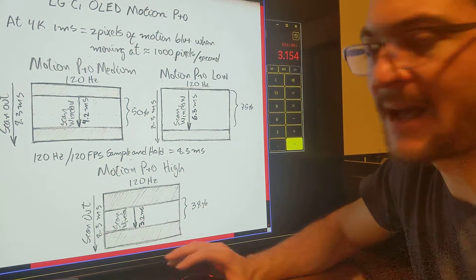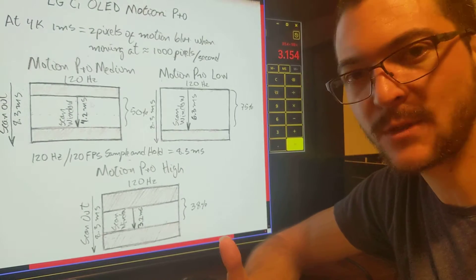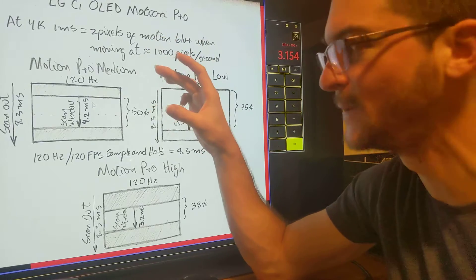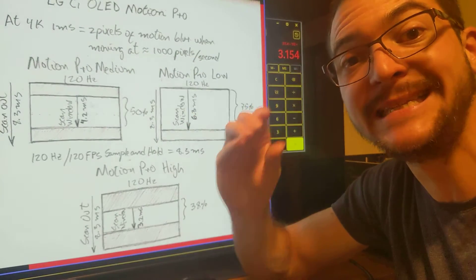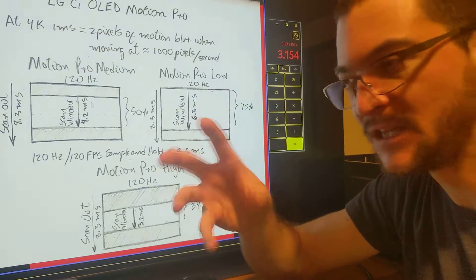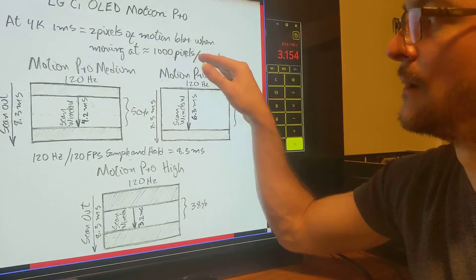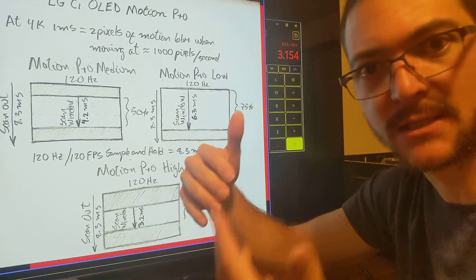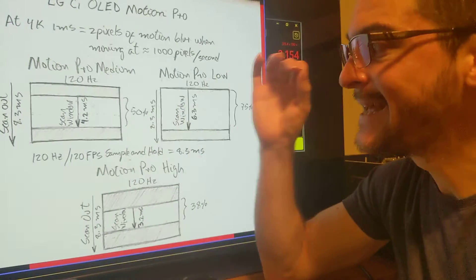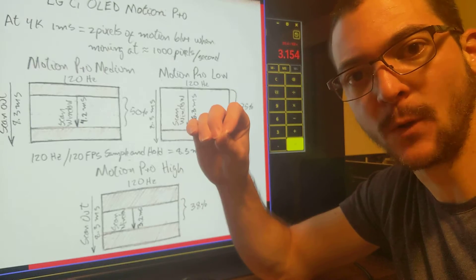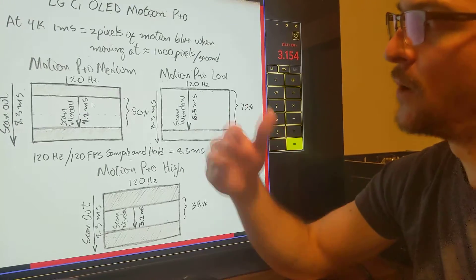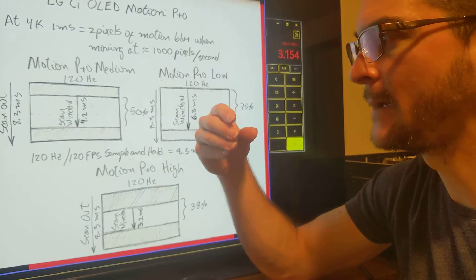So what is Black Frame Insertion doing? Actually, I don't like that term because that's not what is happening. The TV is not inserting a black frame. What Motion Pro is doing is reducing the pixel visibility time. Based on the Blurbusters law — which I rewrote here for 4K, since the original is written for 1080p — that law tells you that motion clarity is equal to the pixel visibility time, and motion clarity depends on the speed the object is moving on screen.